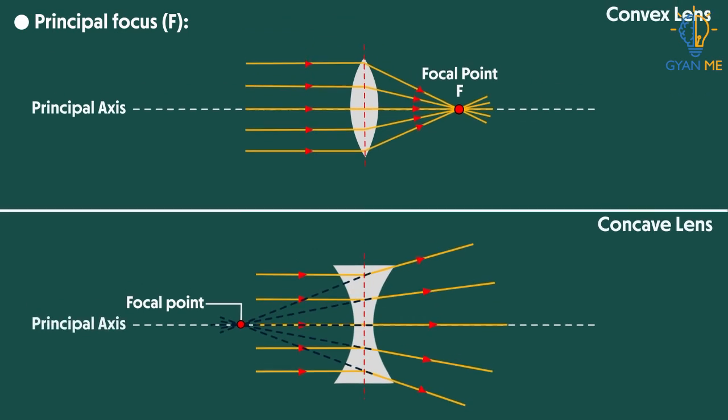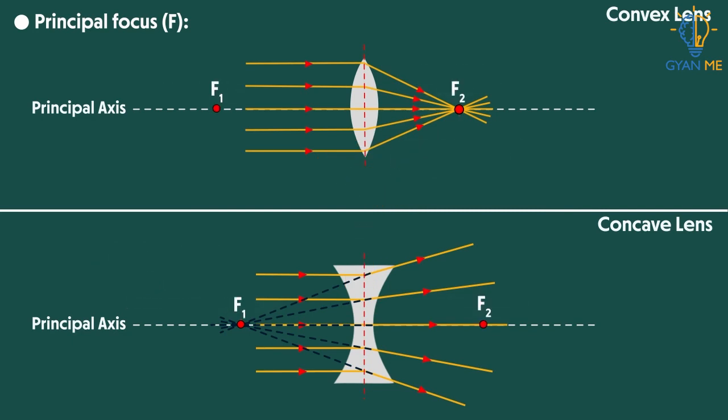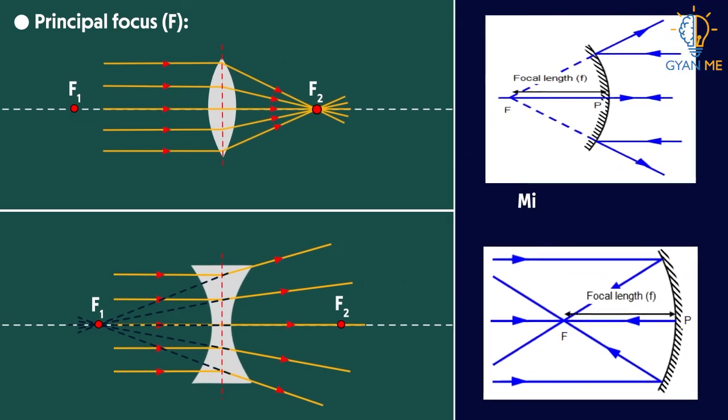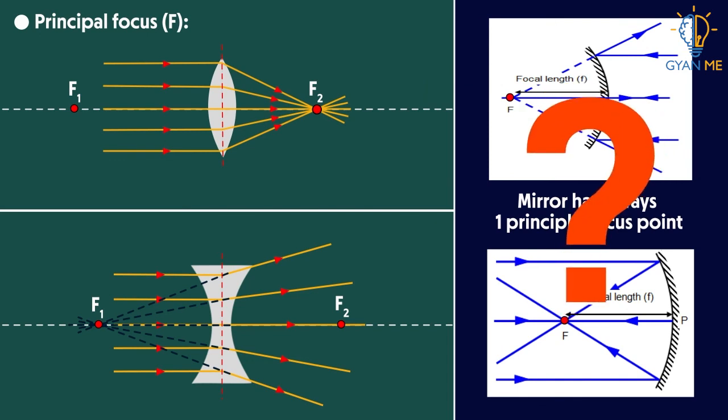So whether it is concave lens or convex lens, this point where all the rays meet is called principal focus of the lens. But hold on, did you see that lens has two principal foci? They are represented by F1 and F2. In contrast to mirror which has always one principal focus point. And can you tell me why?